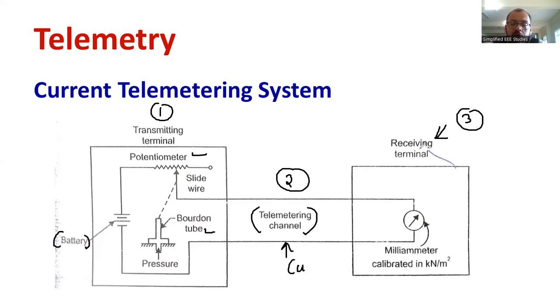When it comes to the receiving terminal, we have a calibrated meter in the form of ammeter only. The range of ammeter is milliammeter. What it does? It measures the current in terms of milliammeter in terms of pressure. Like pressure will be measured in terms of kilopascal or kilo newton per meter square.